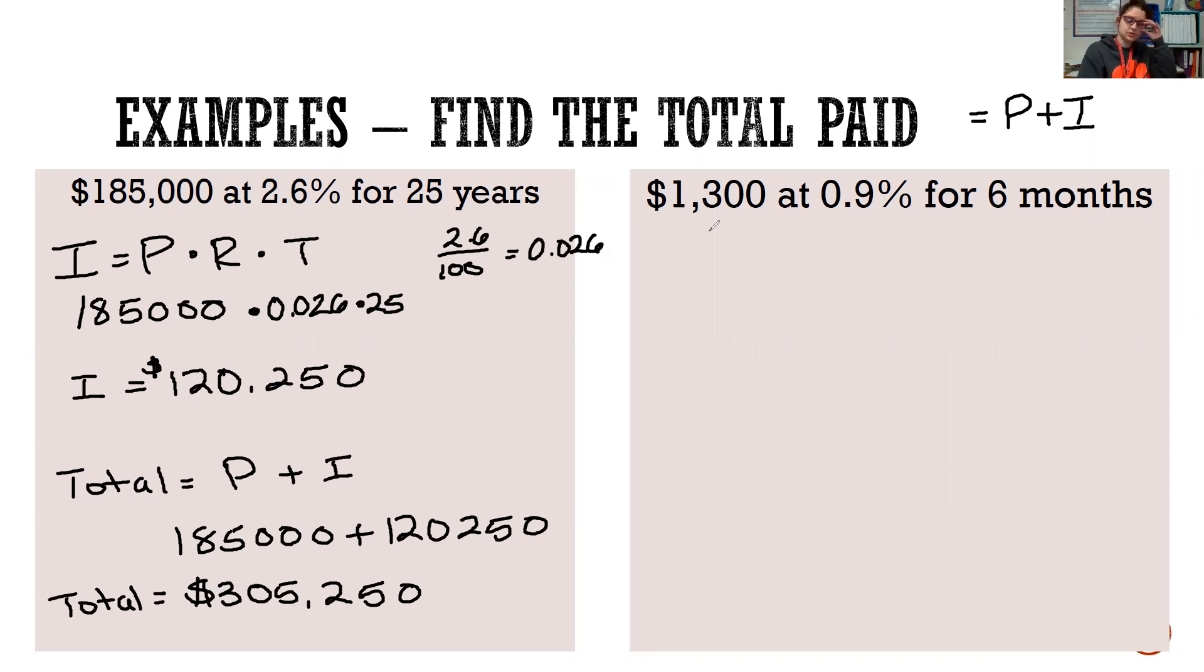Let's look at this example. Suppose you invest $1,300 at 0.9% for six months. How much money will you have earned at the end of six months? So we're looking for the total, but first we have to find I. So I equals principal times rate times time.